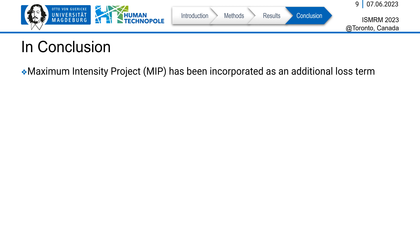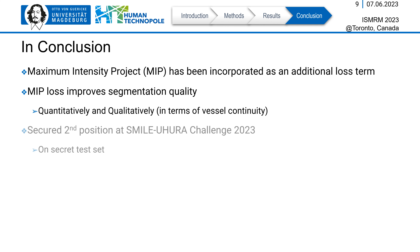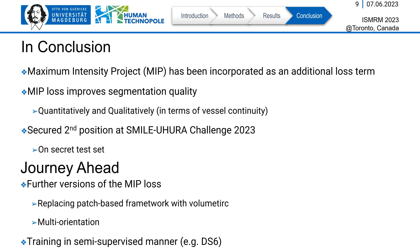To conclude, we proposed a maximum intensity projection based loss term and demonstrated that it improves segmentation quality both quantitatively and in terms of vessel continuity. This method secured second position on the secret test set at the SMILE UHURA vessel segmentation challenge this year. In future, we plan to experiment with further variations of MIP loss, such as replacing the patch-based framework with a complete volumetric one and multi-orientation MIP. We will also attempt semi-supervised training by combining the MIP loss with the DS6 framework.